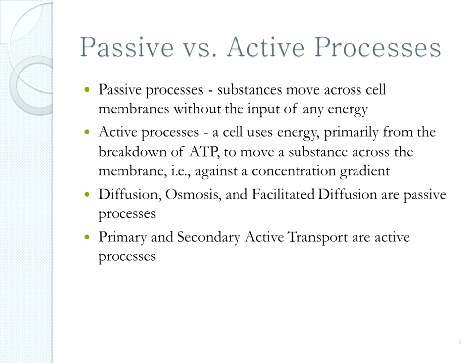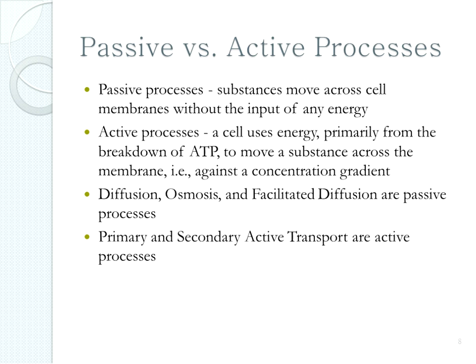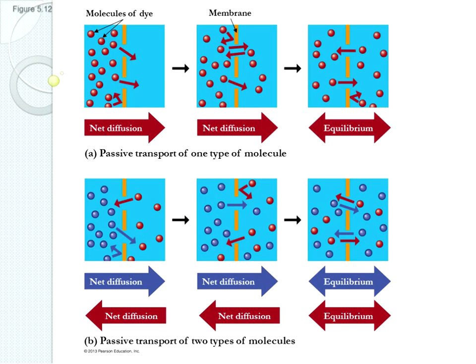When talking about transport processes, we consider whether they use energy — passive versus active. The first type of transport is diffusion. Molecules have a little bit of energy so they're constantly vibrating and they like to spread out. Diffusion is the movement of molecules so they spread out evenly — they move from an area of high concentration to an area of low concentration, moving down their concentration gradient. Dye molecules on one side of a membrane will spread out over time until equally distributed.